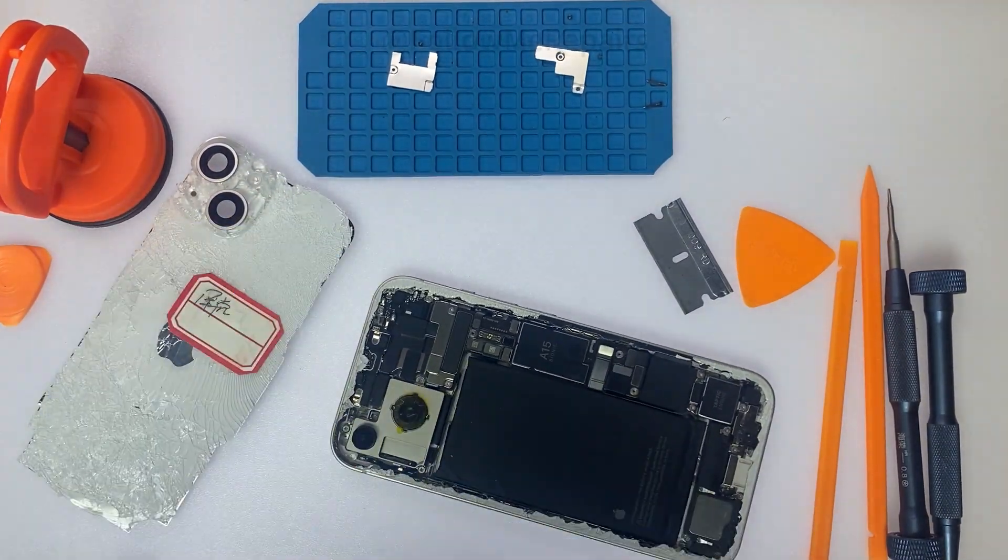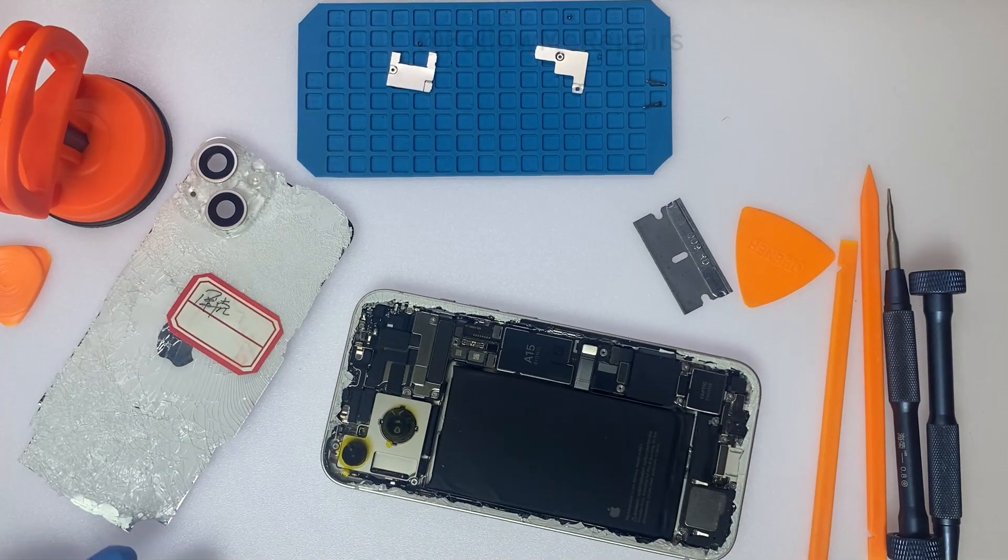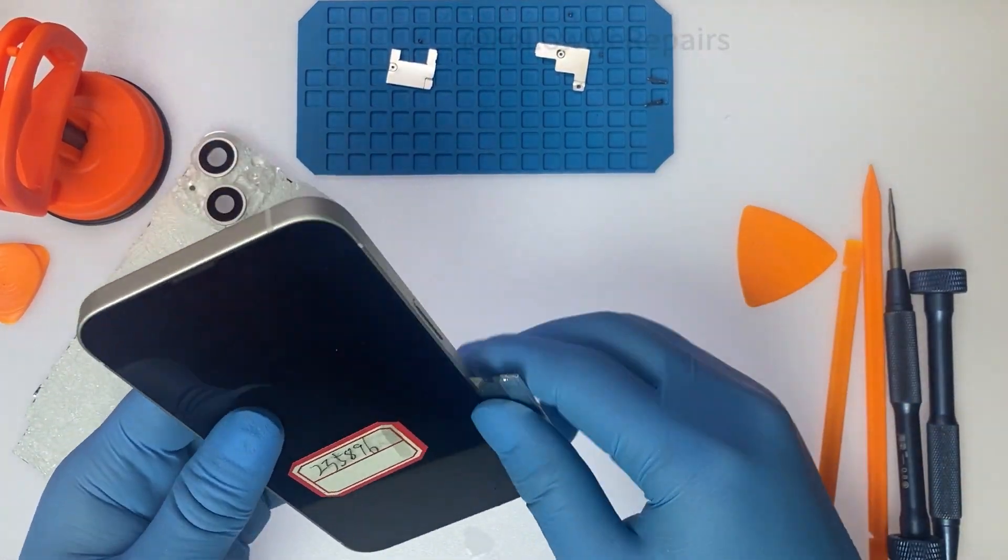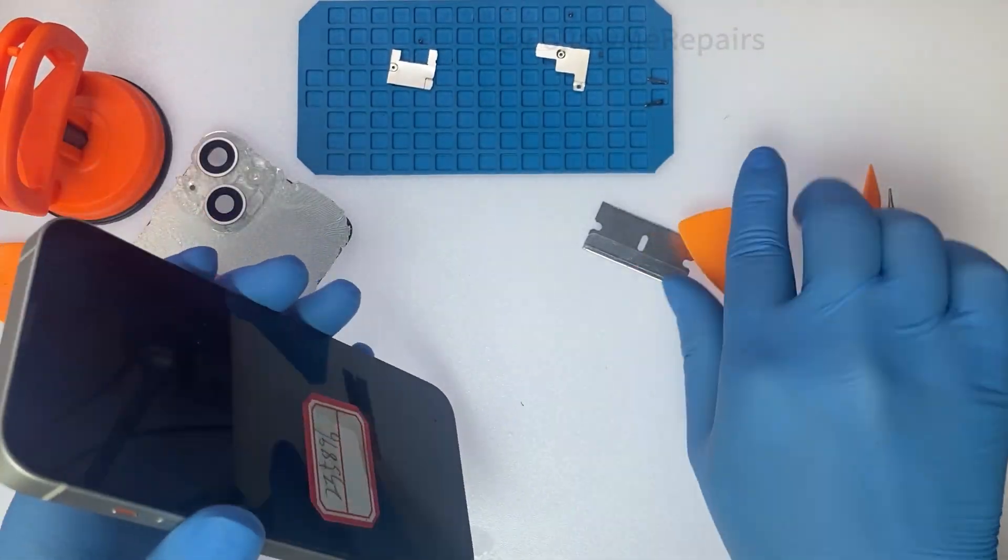To protect the camera lens, apply dust proof tape. Remove the iPhone 14 screen.